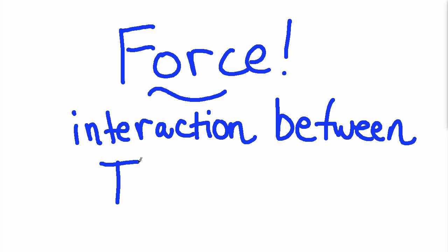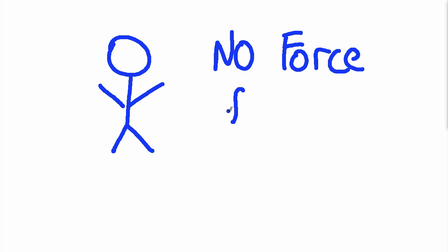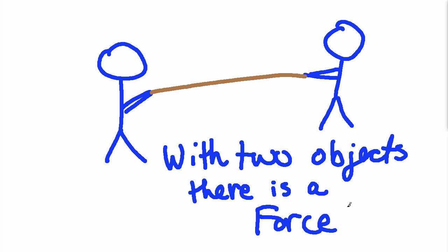At its general level, force is just the interaction between two objects. This is a very powerful way of starting to think about how forces come into being and what they actually mean. Since force is the interaction between two objects, a single object alone cannot have a force. However, if you have two people connected by a rope, they're in contact with each other and each pulling on the other — there'll be a force. The force between the two objects is really just one force they both feel, pointing in opposite directions.